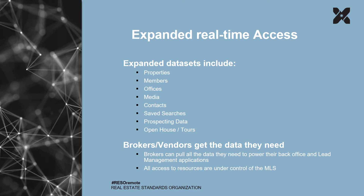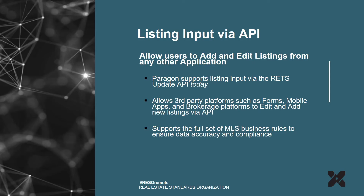Brokers can pull all the data they need to power their back office and lead management applications. All of the data currently coming out is under complete control of the MLS — all of the restrictions and security they've applied over the years all remain coming out of the Web API. Paragon and OpenMLS also currently supports listing input via API. This allows third-party platforms such as forms, mobile apps, and brokerage platforms to edit and add new listings via an API. It supports the full set of MLS business rules to ensure data accuracy and compliance.